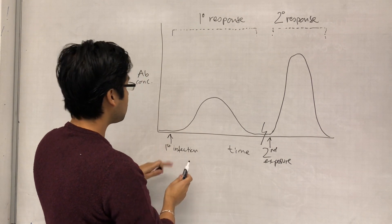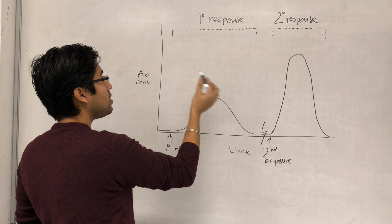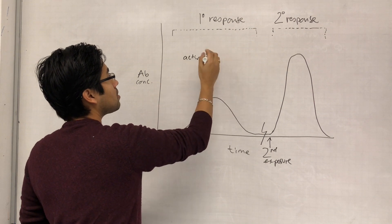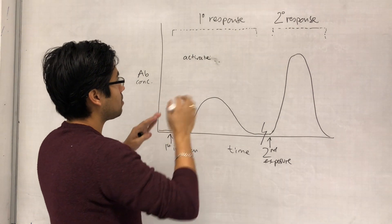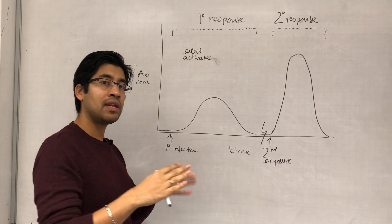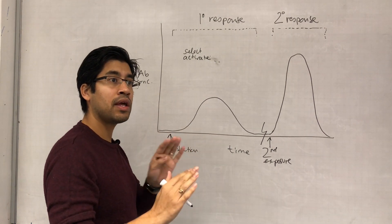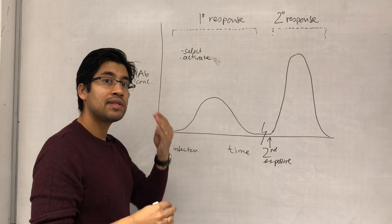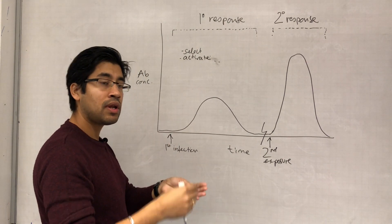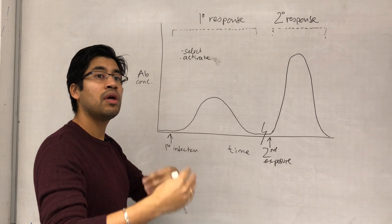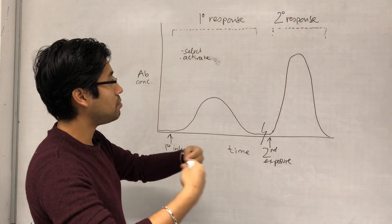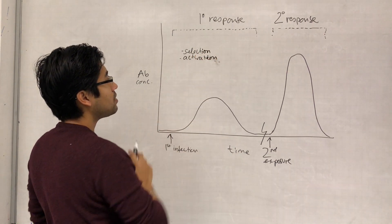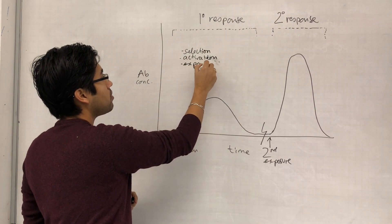The first infection takes time because we need to select - we need to wait for the correct antigen recognition between the antigen presenting cell and a previously unactivated T helper cell. Those cells need to be activated, then we need to select the B cell, wait for that interaction to happen, activate the B cell, and then the B cells undergo their expansion process, followed by production of plasma cells and then antibody. All of that selection, activation, and expansion takes time.